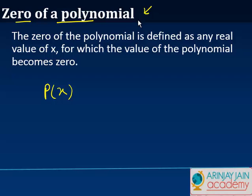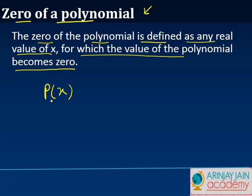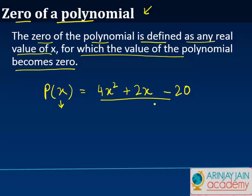In this video we are going to understand what do you mean by a zero of a polynomial. The zero of a polynomial is defined as any real value of x for which the value of the polynomial becomes 0. So let's say for example you have a polynomial given as 4x squared plus 2x minus 20. Any value of x at which this p(x) becomes 0 is known as a zero of a polynomial.